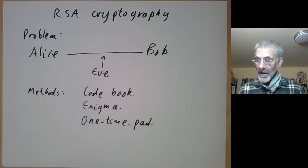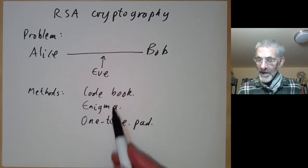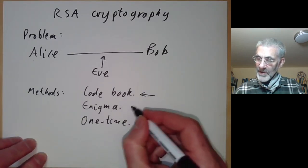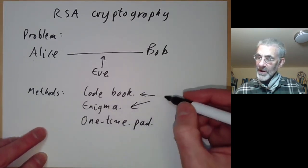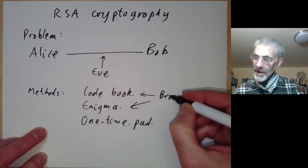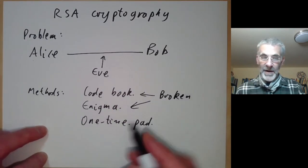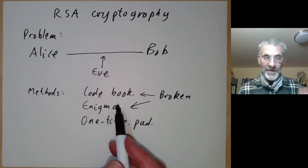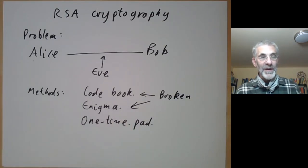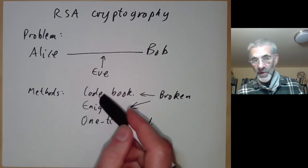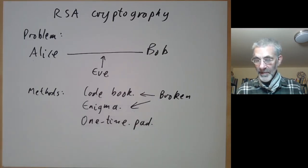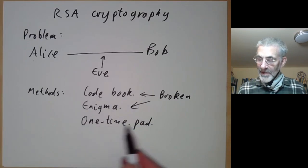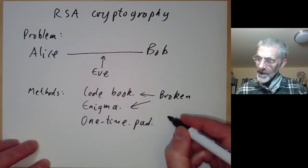These methods all have various problems. Code books and Enigma could be broken by code breaking—the British broke the German codes, though they're rather more quiet about the fact the Germans also broke the British naval codes. One-time pads are very secure but they're really cumbersome.